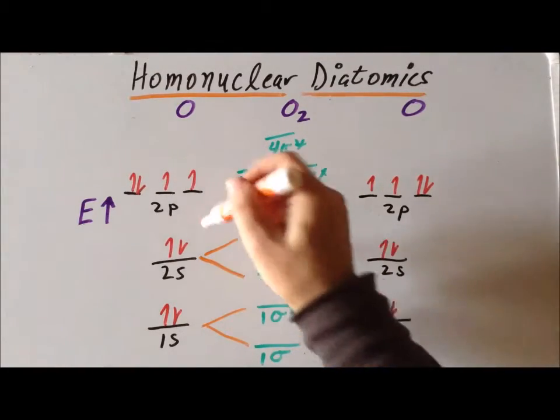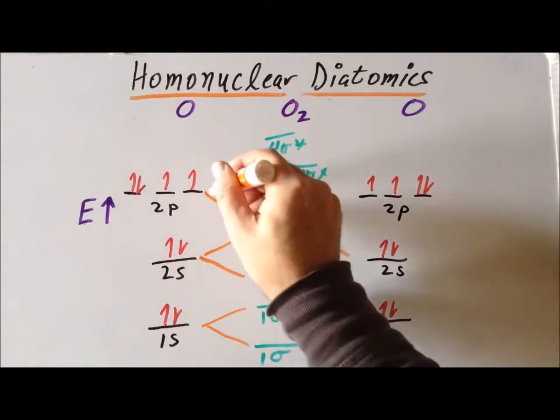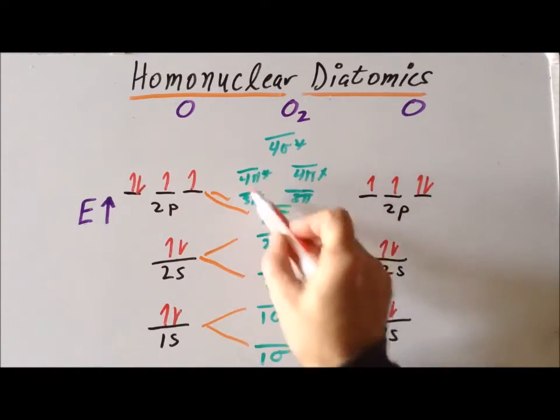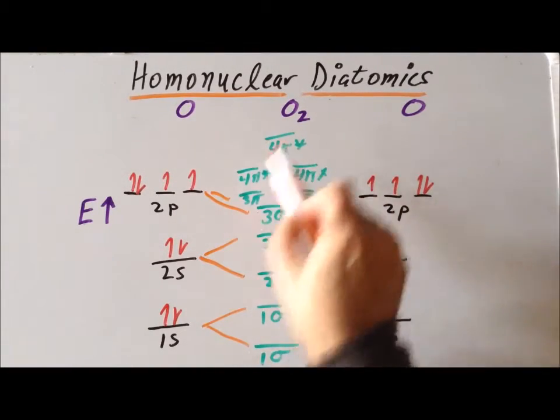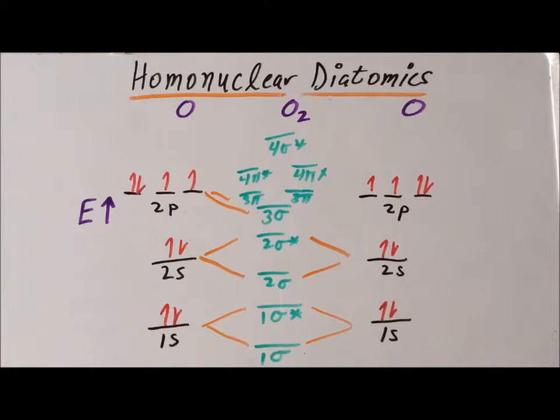But the 3 pi and the 3 sigma are all lower in energy than the 2p orbitals from which they're constructed. And the 4 pi star and the 4 sigma star are higher in energy than the 2p atomic orbitals from which they were formed.